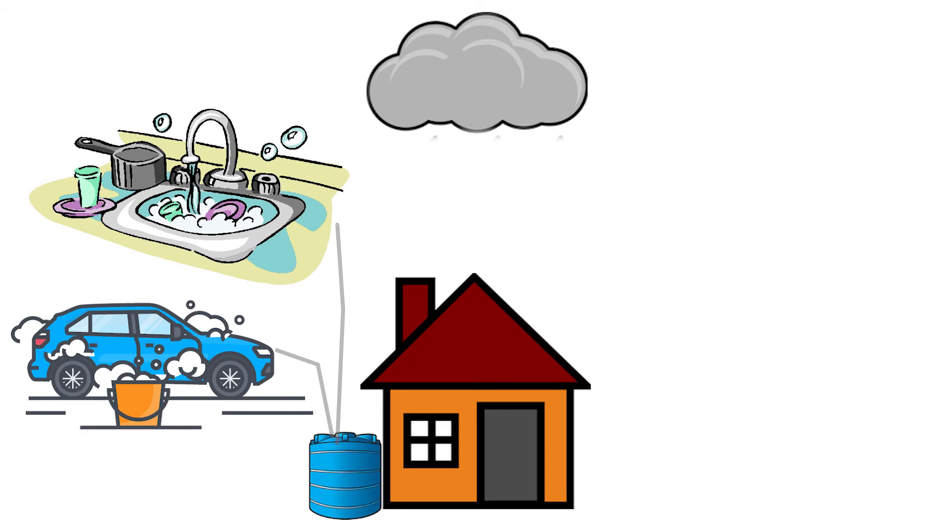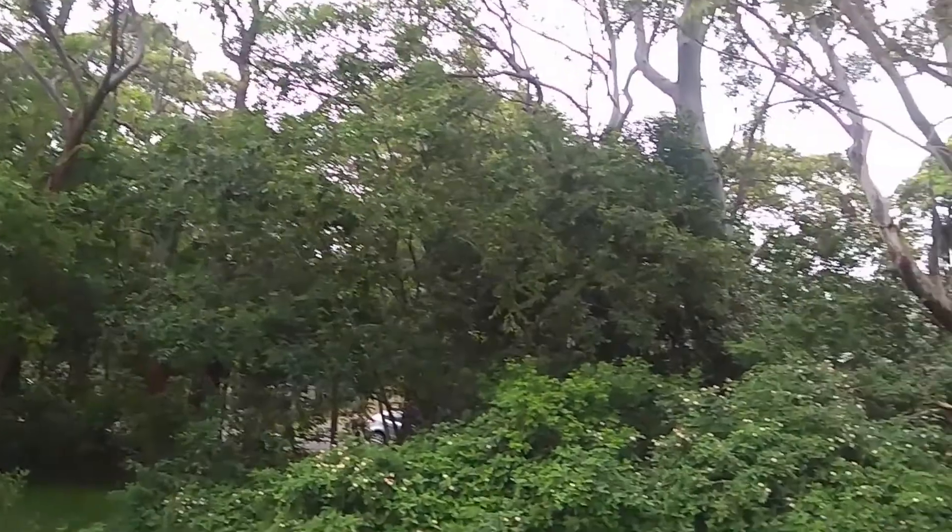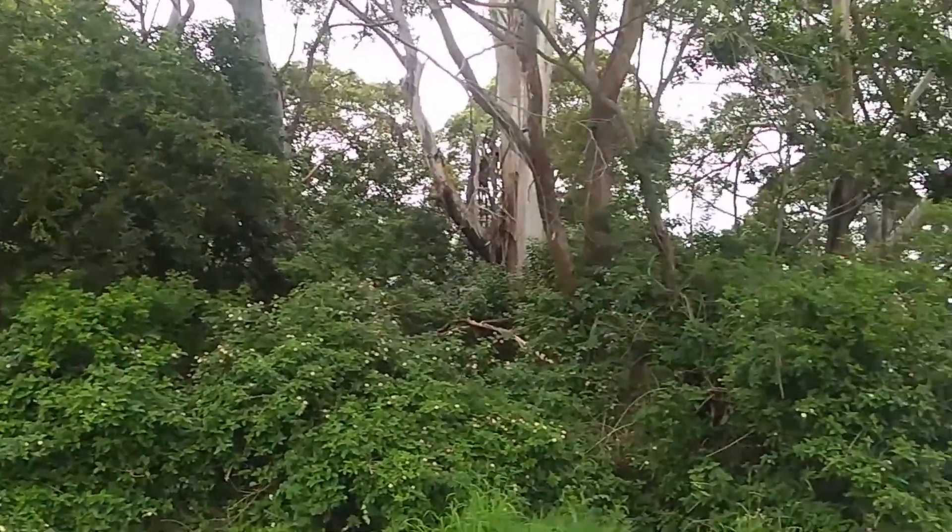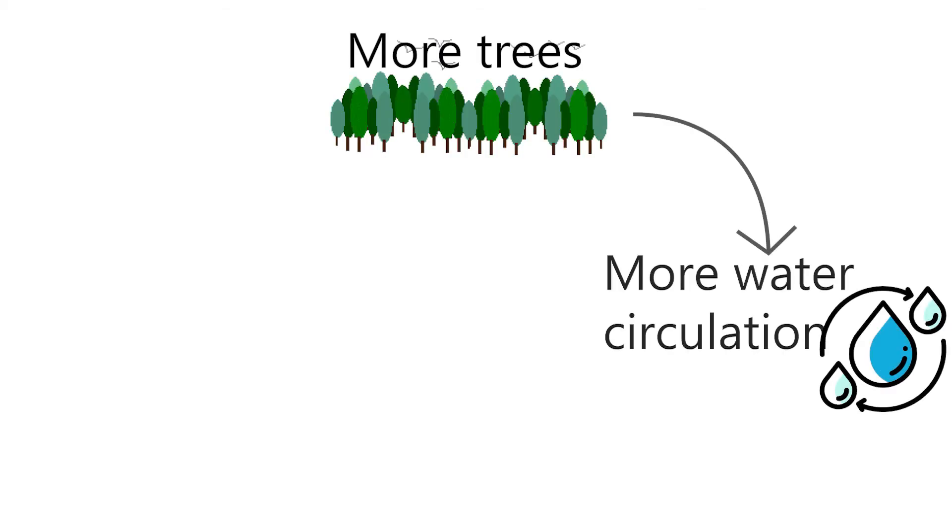A long-term solution is forestation. We've been cutting trees left and right to make space for construction when we know that there's a clear link between the number of trees and the amount of rainfall. The more trees we have, the more water circulation will occur, causing more rainfall.